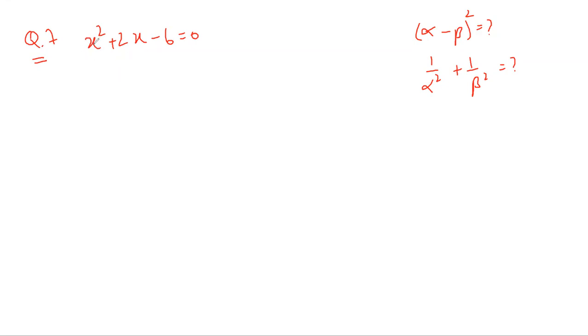So the coefficient of x squared is one, yes. So we have alpha plus beta that is equal to minus two, and alpha beta that is equal to minus six.